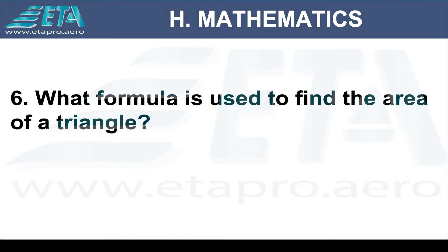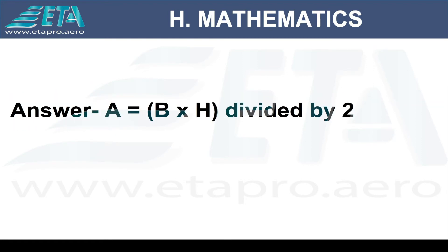What formula is used to find the area of a triangle? The area is base times height divided by 2.